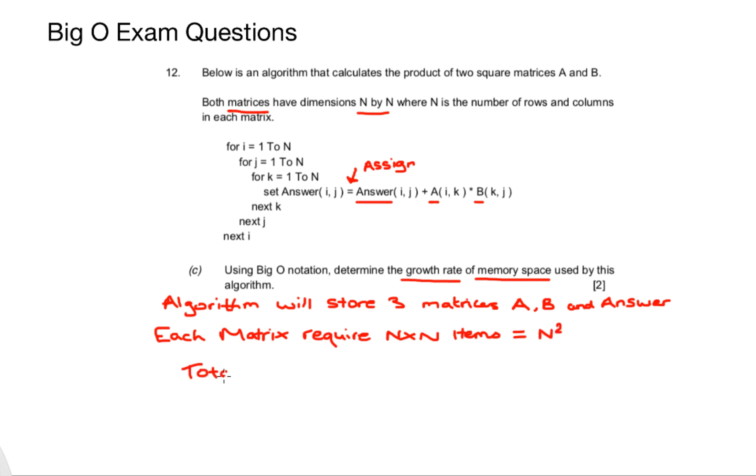So in total, I have 3 by N by N or 3N squared. And as N increases in its size, it will dominate 3, because 3 is a constant and it will not change. So therefore, we can say that N squared will dominate this equation. So finally, it's order of N squared.